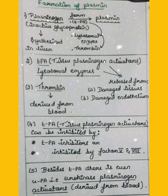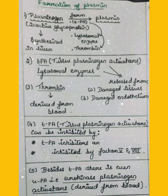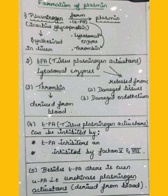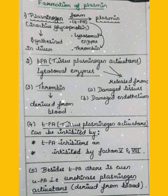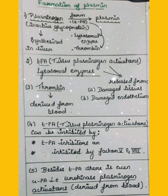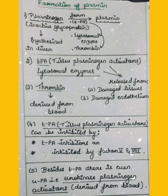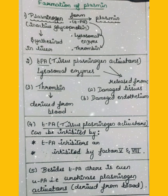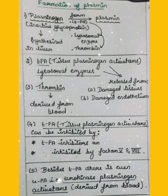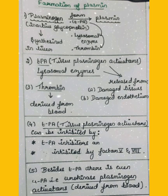In the formation of plasmin, one thing we have to remember: plasminogen mainly forms plasmin. This plasminogen is nothing but an inactive glycoprotein. When plasminogen is in the presence of TPA — tissue plasminogen activator — and lysosomal enzymes as well as thrombin, it will lead to the formation of plasmin.